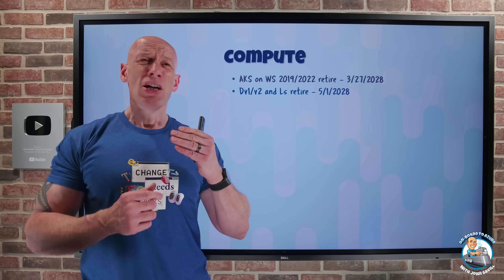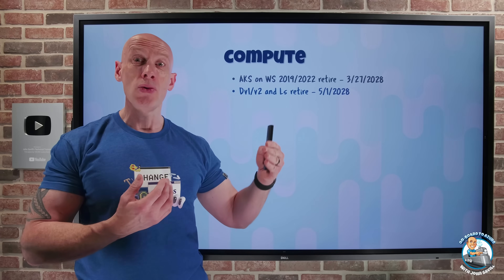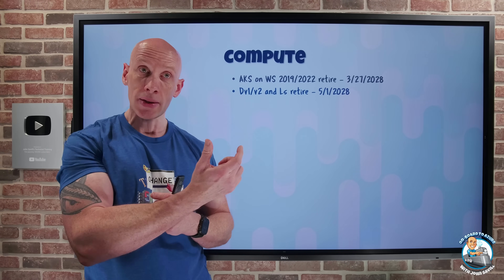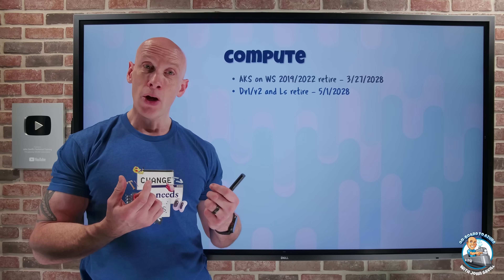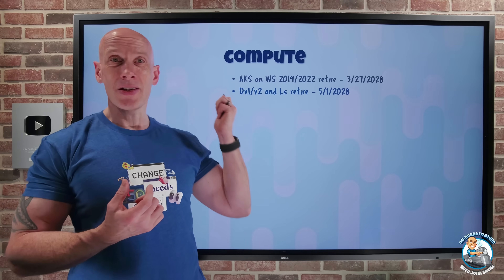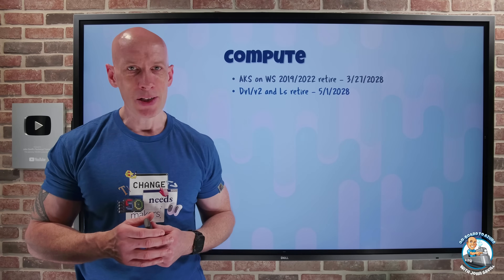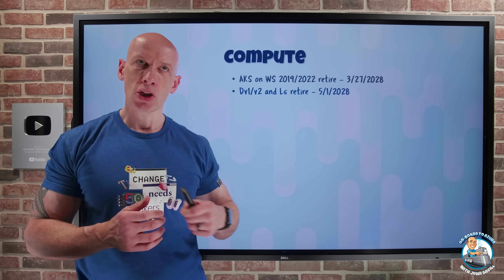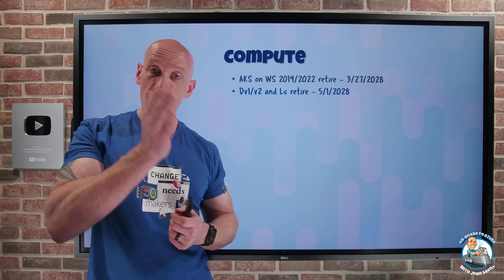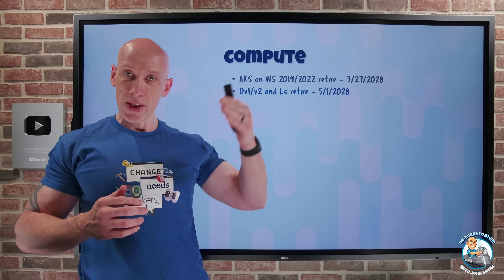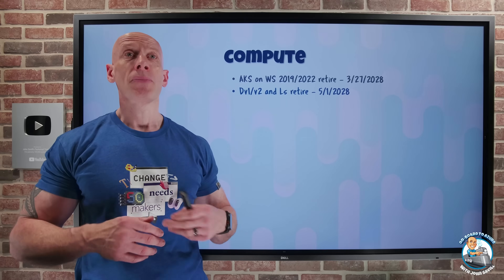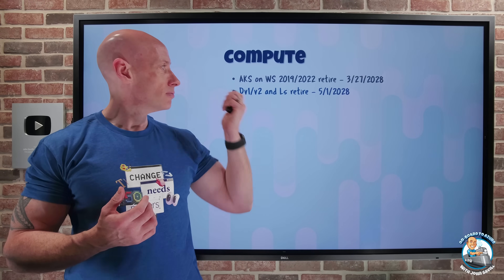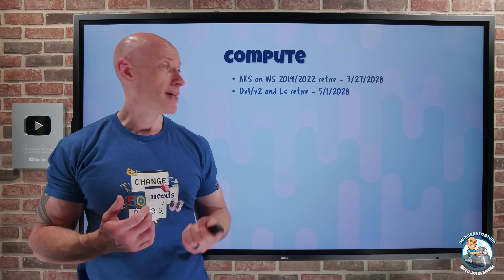Remember, you generally want to try and stay on the newer SKUs anyway because they give a much better price-performance ratio. I don't really want to be running on a SKU that's five generations behind. Hopefully you'll use infrastructure as code and DevOps to roll these things out and stay current, but you definitely need to get off those in the next three years.